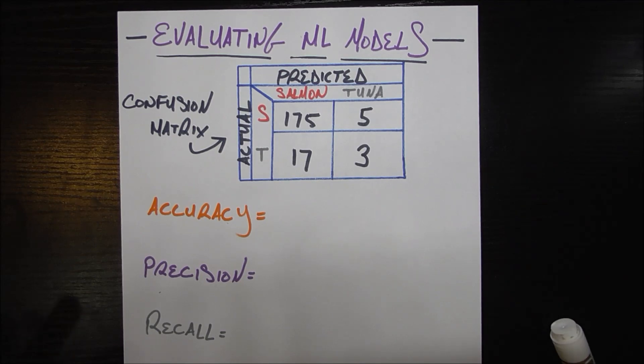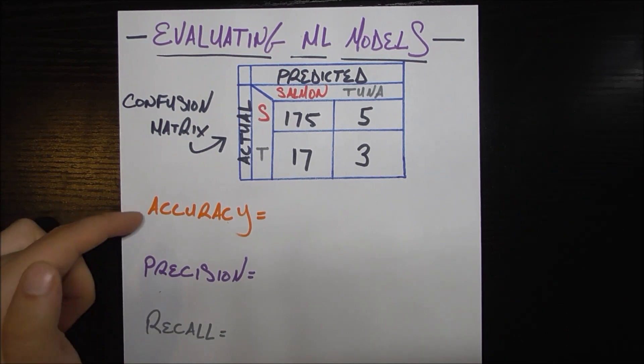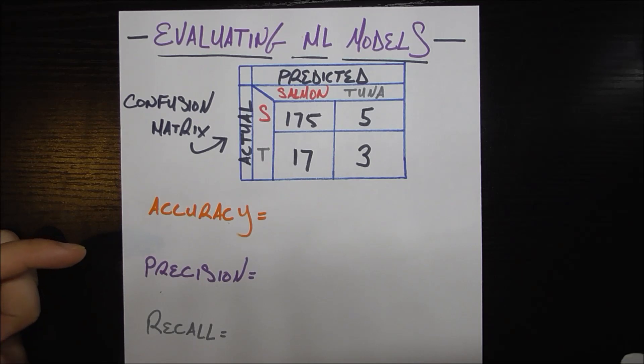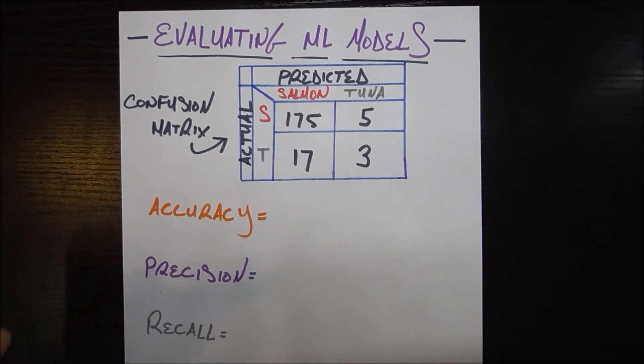It might seem obvious to you, you might say, I just take how many I got correct divided by how many guesses I made and that's my metric, right? That should be enough. Well that is one possible metric you can use and it's called accuracy, but we'll see why that's not always the best metric you want to use or at least it's not the only metric you want to calculate to see how good of a job you've done.